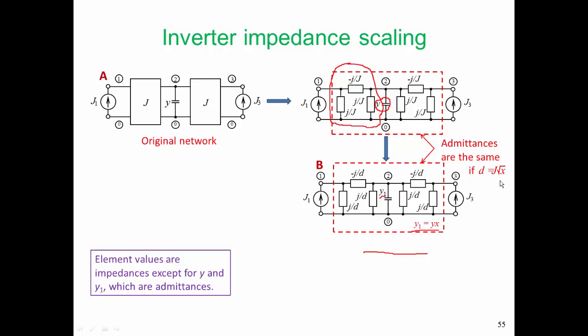More specifically, the nodal admittance matrices of those two circuits, and they will be two-port matrices, will be the same if D is equal to J times the square root of X.